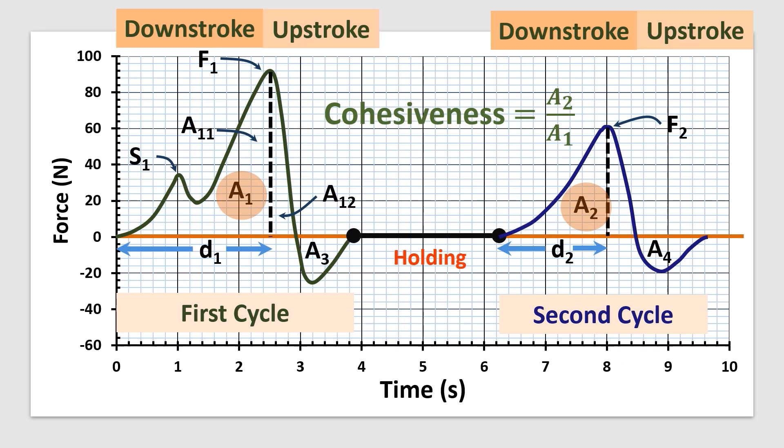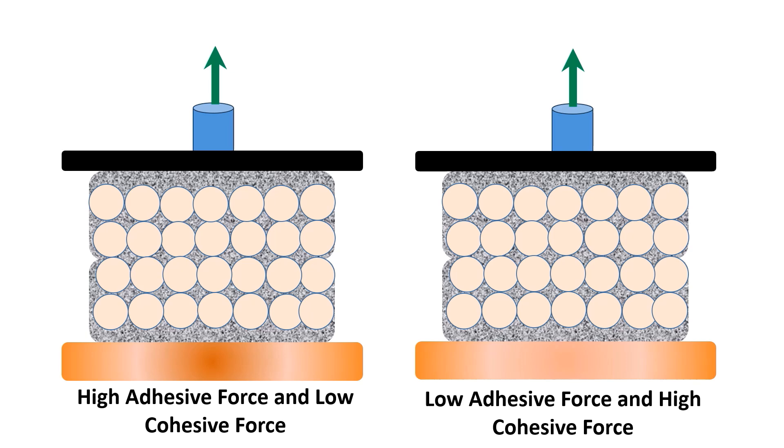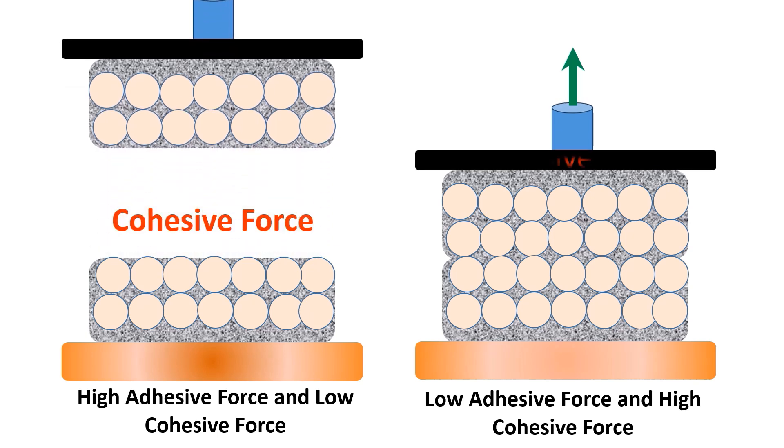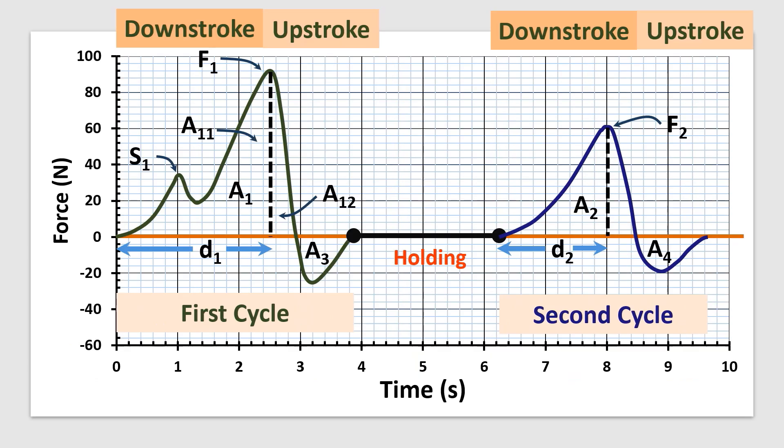Adhesiveness is the negative area of the first cycle, that is A3. It represents the work necessary to pull the compressing plunger away from the food surface. Cohesive force is within a food while adhesive force is on the surface of a food. In this slide we could observe the cohesive and adhesive failure: first cohesive failure and second adhesive failure.